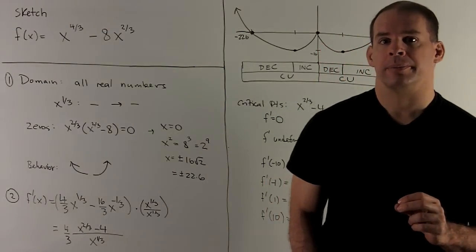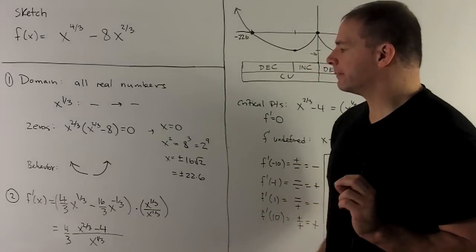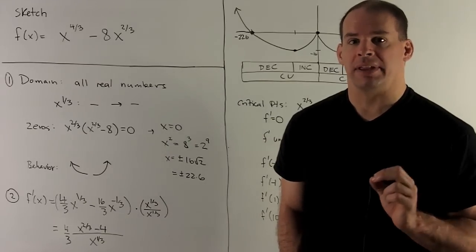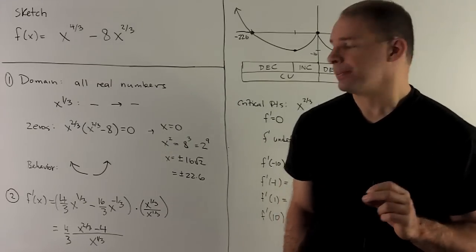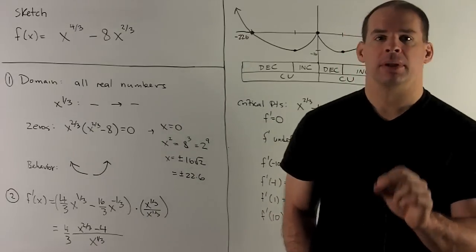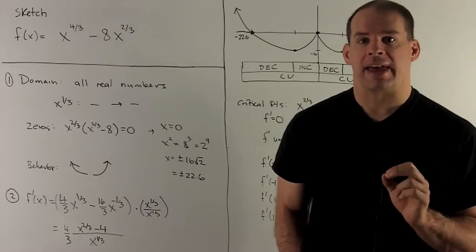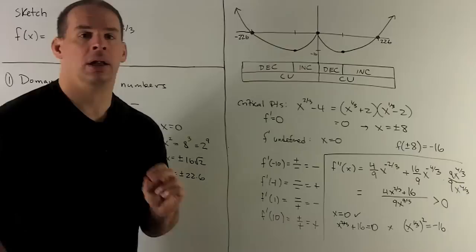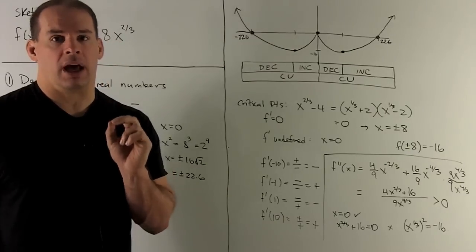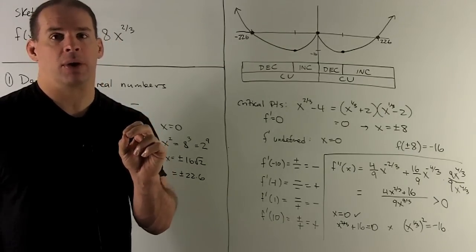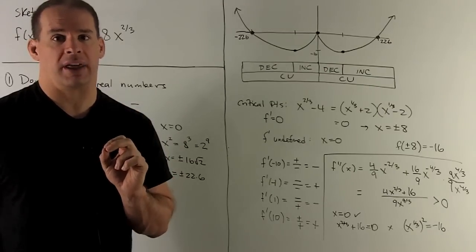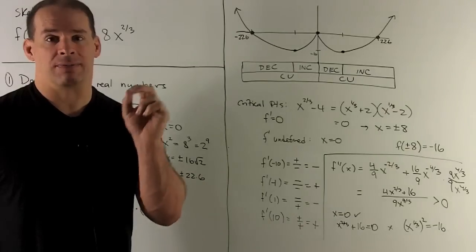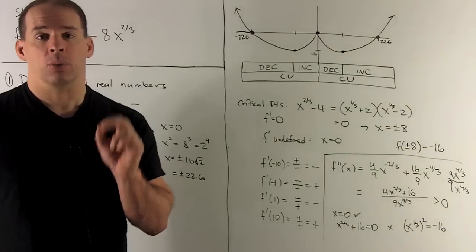Let's move on to the second derivative. Differentiating (4/3)x^(1/3) gives (4/9)x^(-2/3). Differentiating -(16/3)x^(-1/3) gives (16/9)x^(-4/3). To clean up, multiply through by 9x^(4/3) over itself to clear the negative exponents, giving a second derivative with 9x^(4/3) in the denominator and 4x^(2/3) + 16 in the numerator.